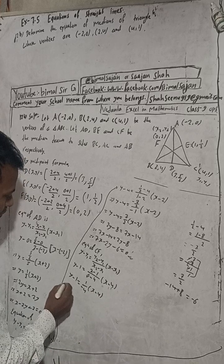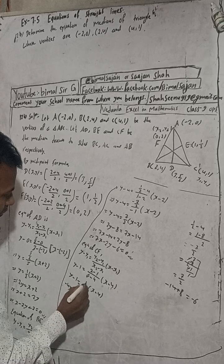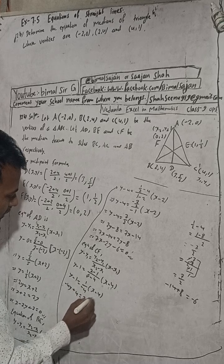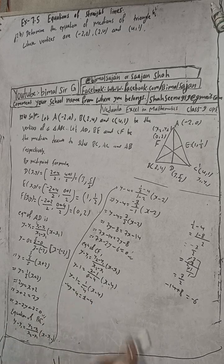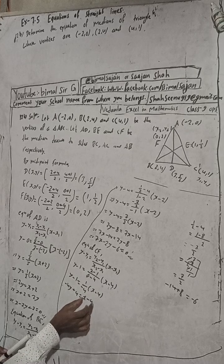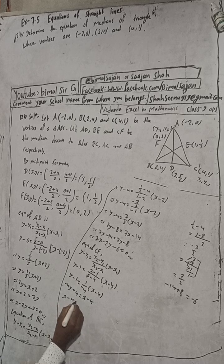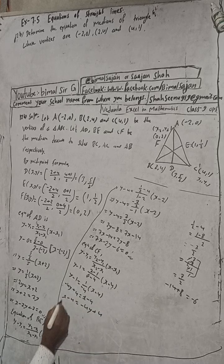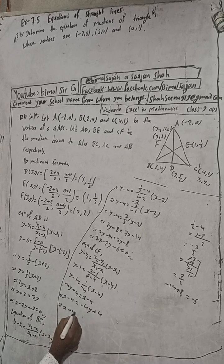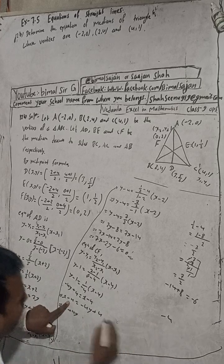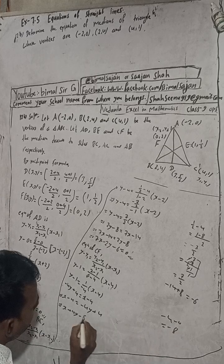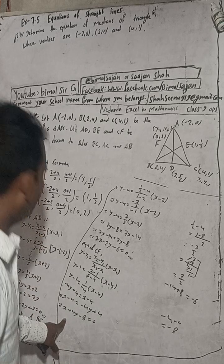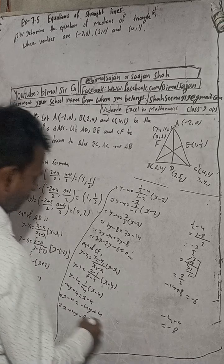Multiplying both sides by -4: -4y + 4 = x - 4. Rearranging: x - 4 = -4y + 4, so x + 4y - 4 - 4 = 0, giving x + 4y - 8 = 0. The book answer is x + 4y - 8 = 0. This is correct.